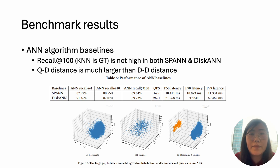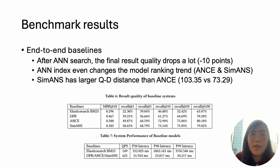The second challenge is the embedding retrieval algorithm challenge. We find that it is difficult to achieve high recall when the number of k is large. One reason is that the distributions of queries and documents are far from each other, which weakens the transitivity of nearest neighbors — the fundamental assumption of ANN indexes.